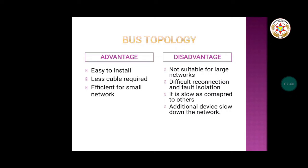Advantages of bus topology include easy installation, less cable required, and efficiency for small networks. Disadvantages are that it is not suitable for large networks because signals travelling along the backbone cable can be transformed into heat, leading to signal failure or weak signals. Reconnection and fault isolation are difficult, and adding other devices slows down the network — additional devices slow down the overall transmission.